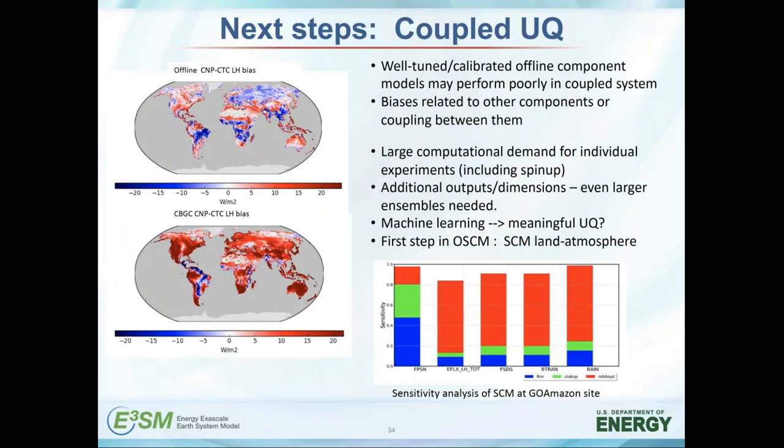We're also thinking about how to do UQ in the coupled system. The model is very expensive and we do reasonably well in individual components. But if you look at the bias in latent heat flux in offline ELM simulations versus the coupled simulation, you get a very different pattern of bias. Those biases are potentially related to other components or arise from coupling between components, so looking at offline components alone won't give you that full analysis. There is large computational demand including spin-ups that really limits what we can do. Hopefully some of the machine learning work can help lead to more meaningful UQ in a coupled system — the promising result using dimension reduction to reduce ensemble members required might help there.